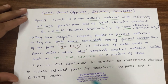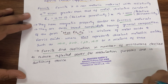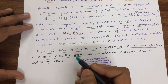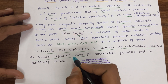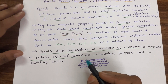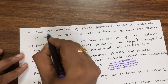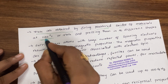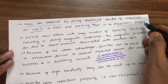Ferrites find applications in a number of microwave devices to reduce reflected power. When sending power from one port to another, there is a possibility of reflected power in waveguides and ports, and ferrite materials address those issues. Ferrites are obtained by firing powdered oxides at very high temperatures — 1100 degrees Centigrade or more — and then pressed into different shapes to fabricate devices.